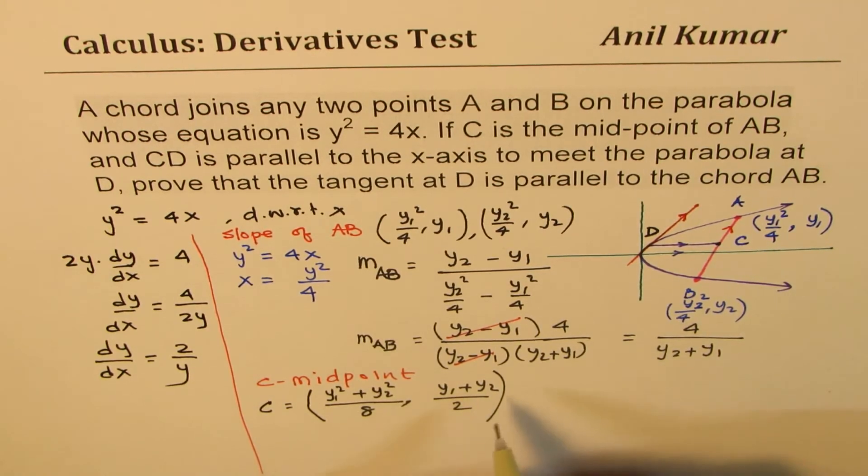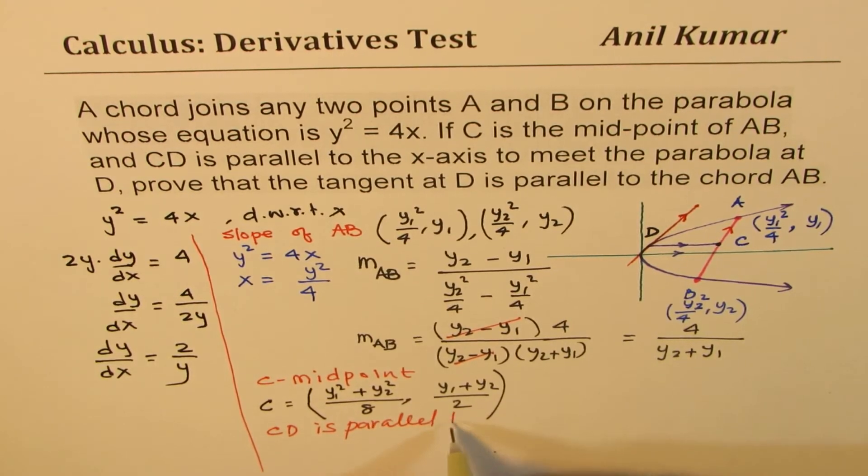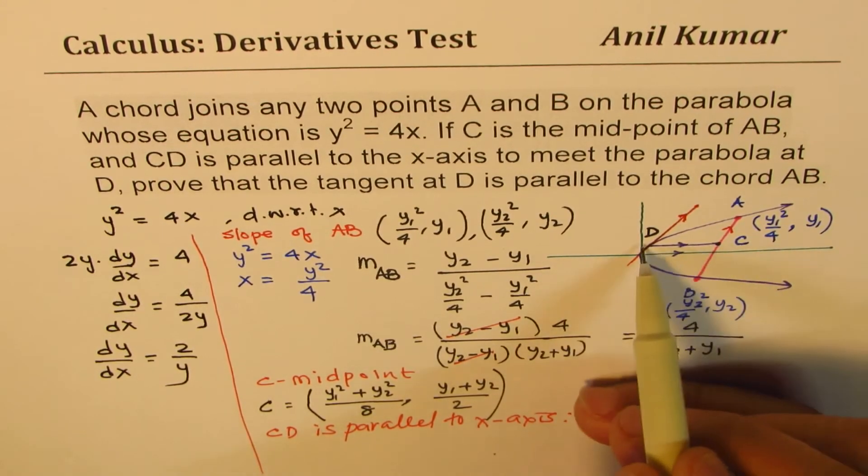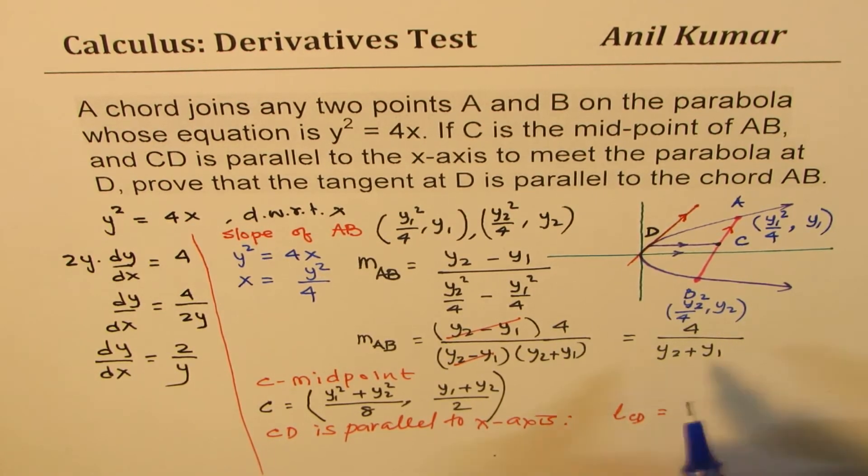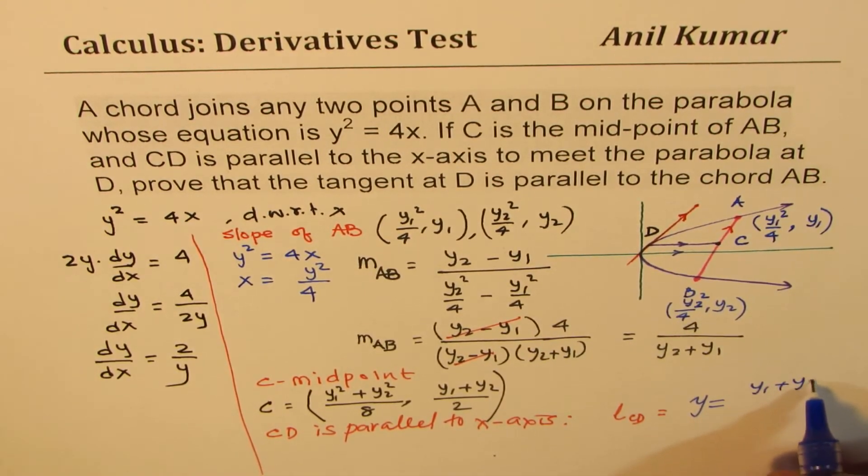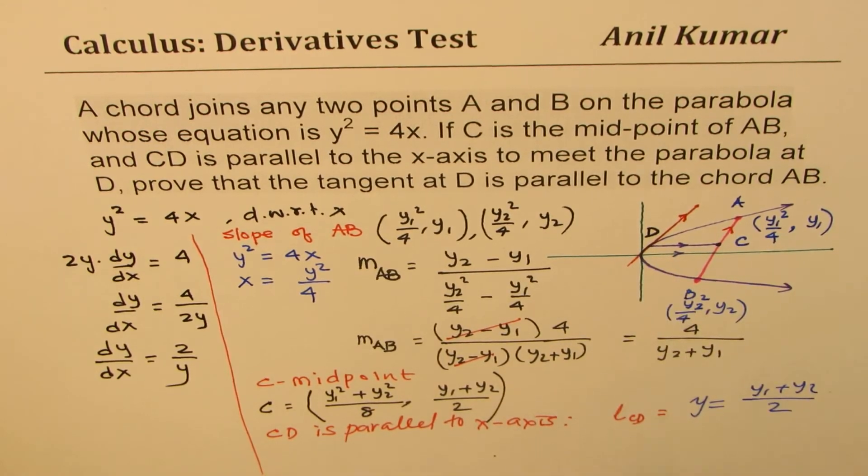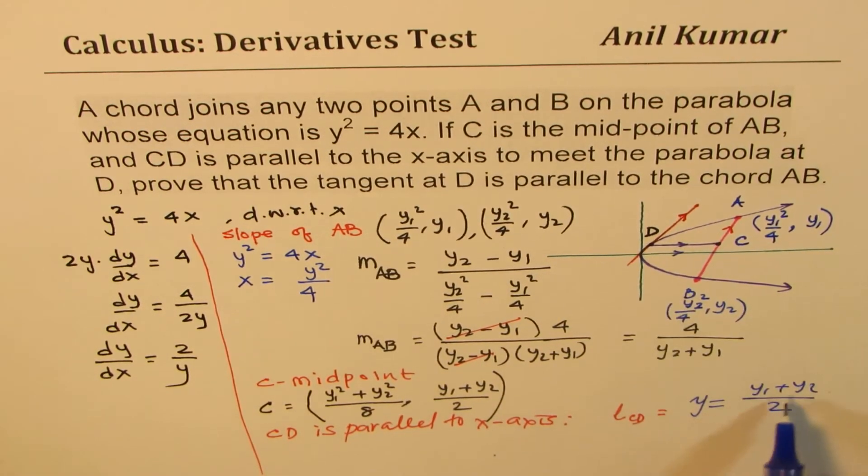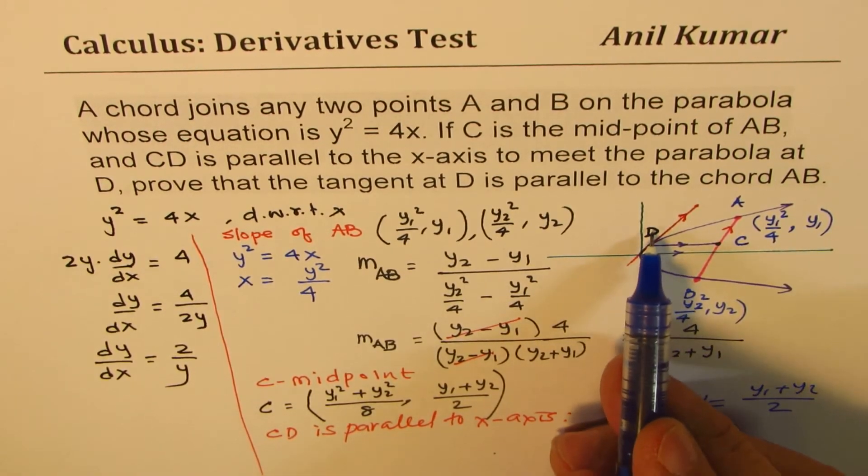The second thing we also learn is that CD is parallel to x-axis. Now what does that mean? If CD is parallel to x-axis, that means the equation of the line CD is y equals to the constant y value, which is (y₁ + y₂)/2. So that becomes the equation of line CD. That means the y value of D is (y₁ + y₂)/2.